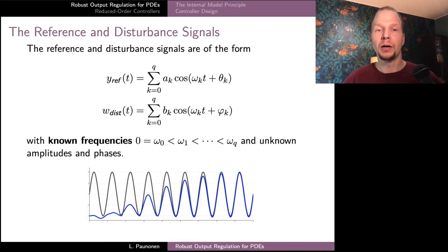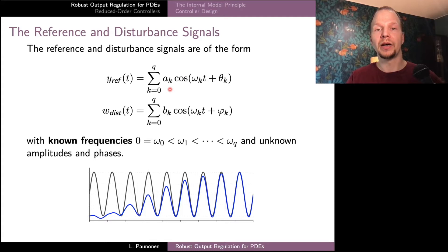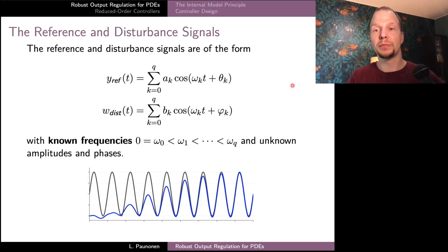Starting from the very beginning, in the robust output regulation problem we consider reference and disturbance signals which classically are assumed to have very specific forms. Both consist of a finite number of frequency components with some known frequencies omega_k and possibly unknown amplitude and phase coefficients. It's possible to generalize these classes to signals containing polynomially growing factors or an infinite number of frequency components, but in this presentation we stick with this class.